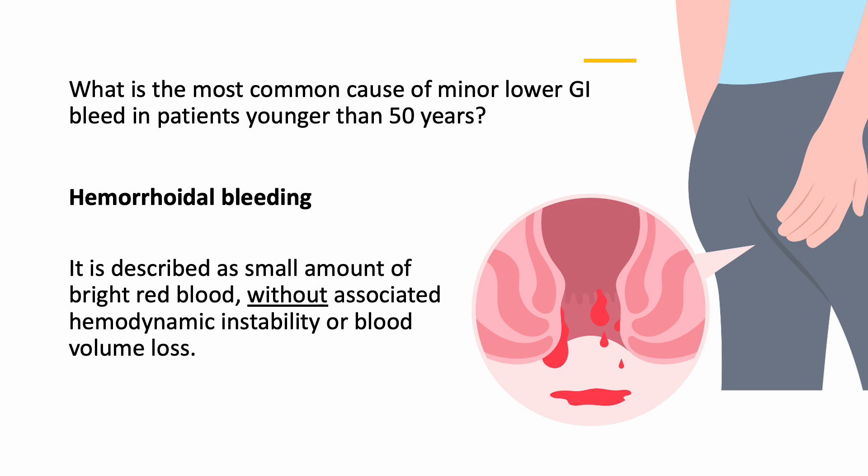What is the most common cause of a minor lower GI bleed in patients less than 50? The most common cause is hemorrhoidal bleeding. It is described as a small amount of bright red blood without associated hemodynamic instability or significant blood volume loss.